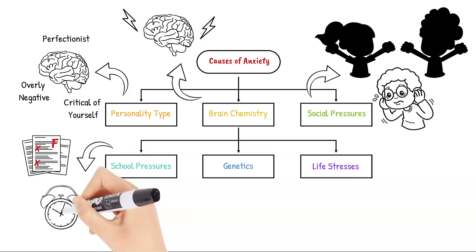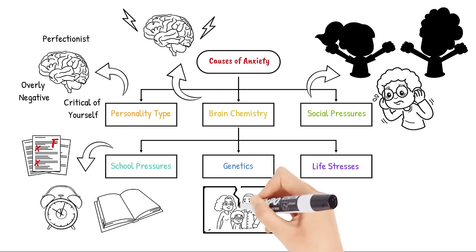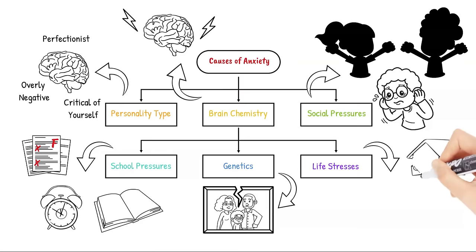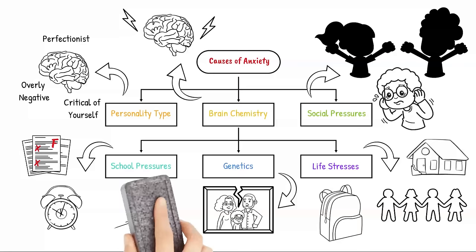A family history of anxiety often plays a role in how severe our anxiety is. Life stresses that can cause anxiety might include stressful situations at home, school, or with friends. Other things that might cause anxiety include health issues, medication, or drugs and alcohol.